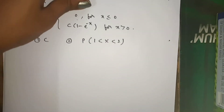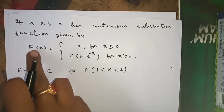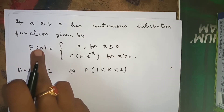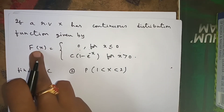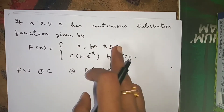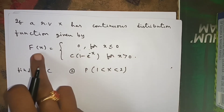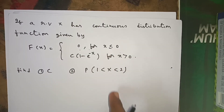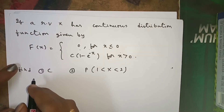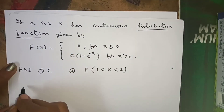The next problem: if a random variable X has a continuous distribution function — note this is capital F(x), not the PDF — where F(x) = 0 for x ≤ 0, and for x > 0, F(x) is given. We need to find constant c. Remember, capital F(x) is the cumulative distribution function, not the PDF.